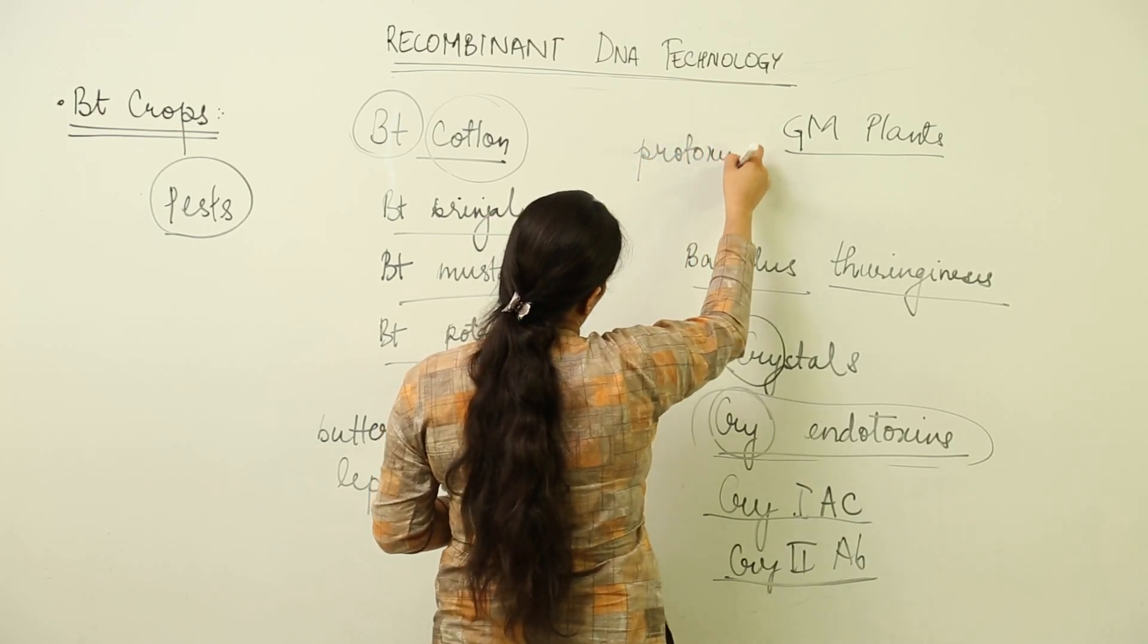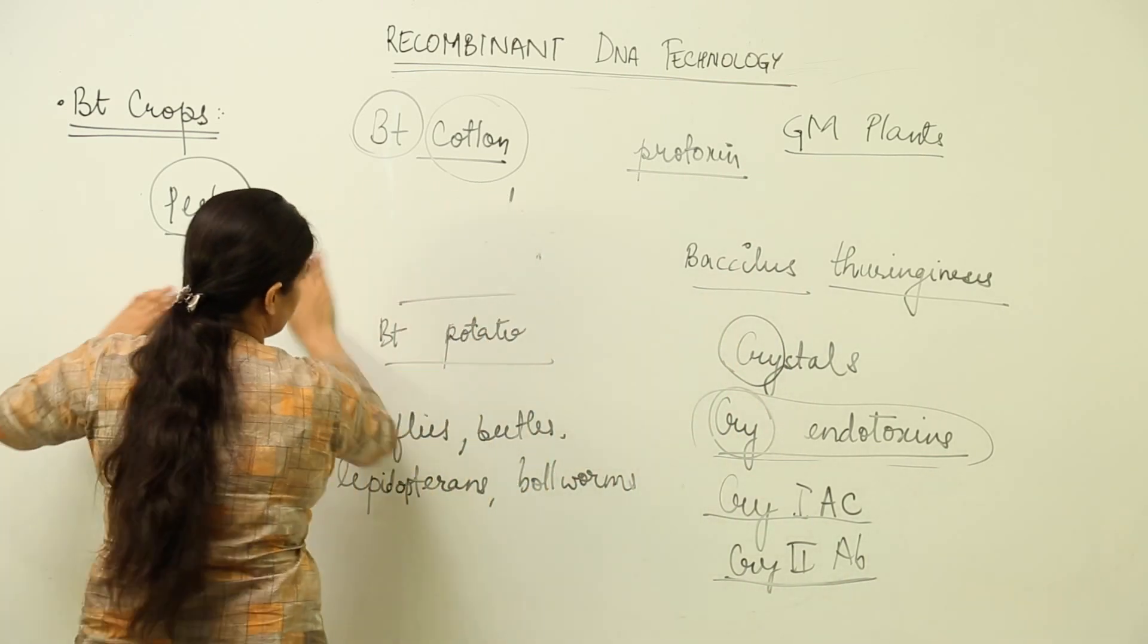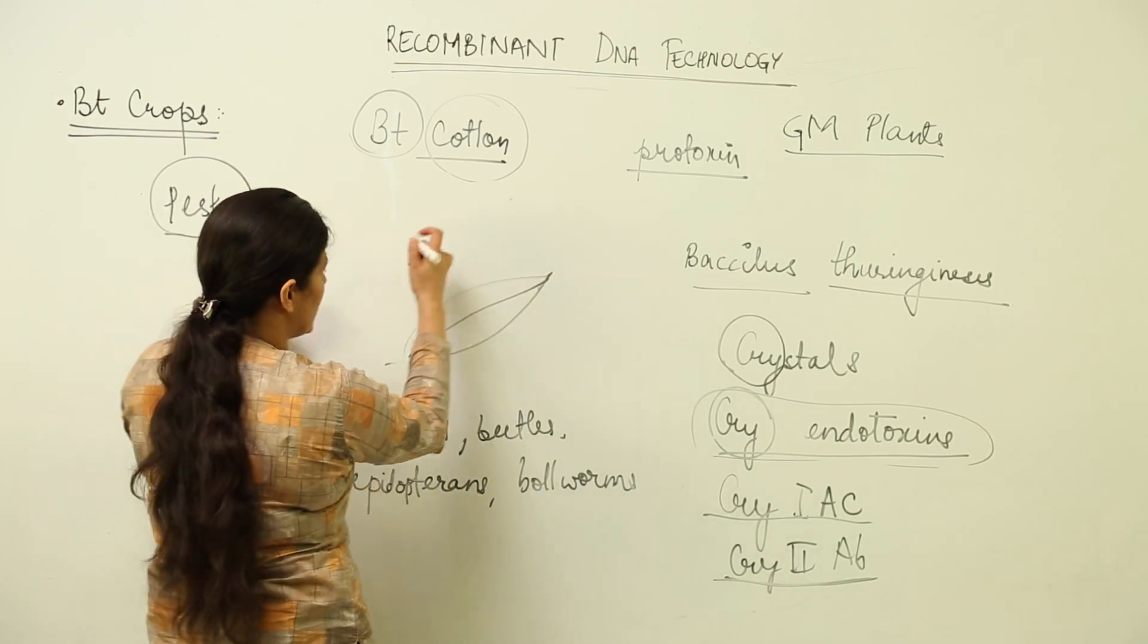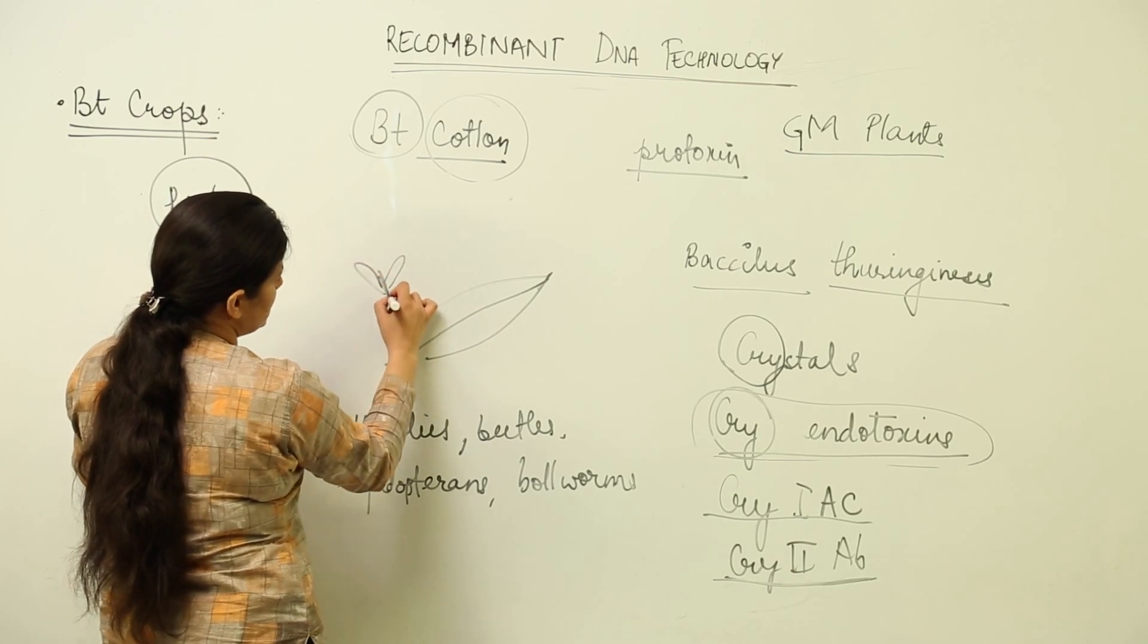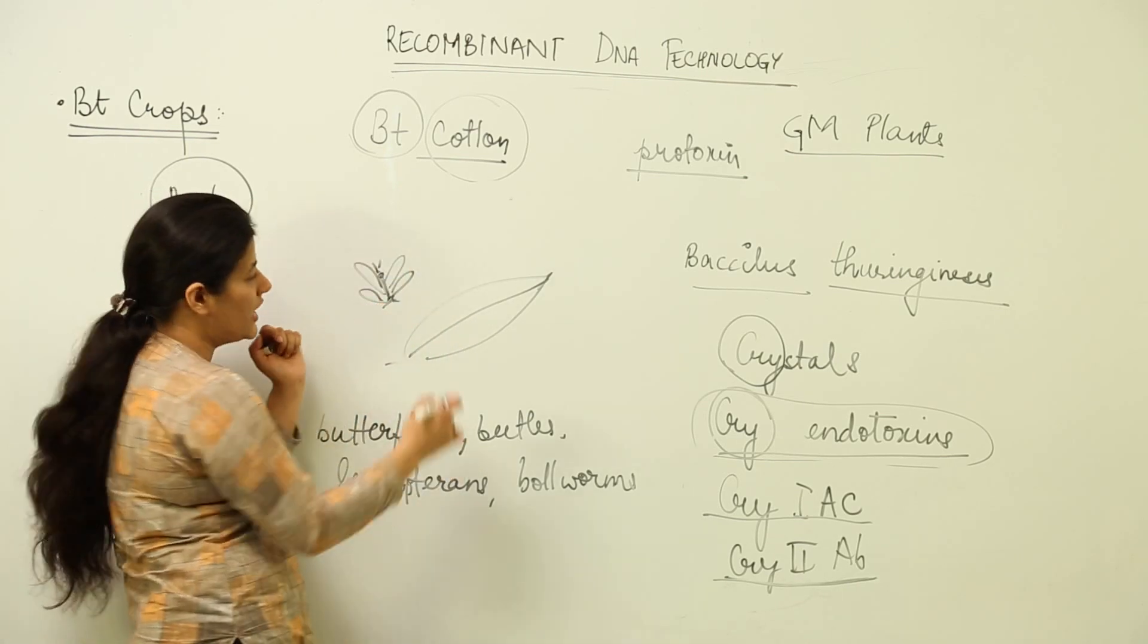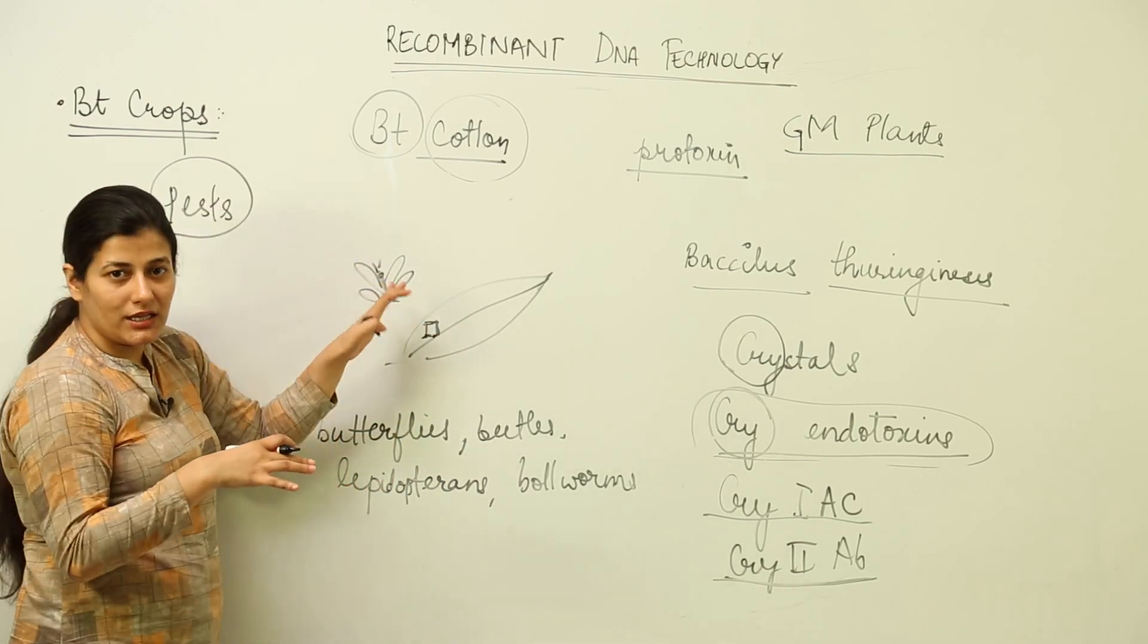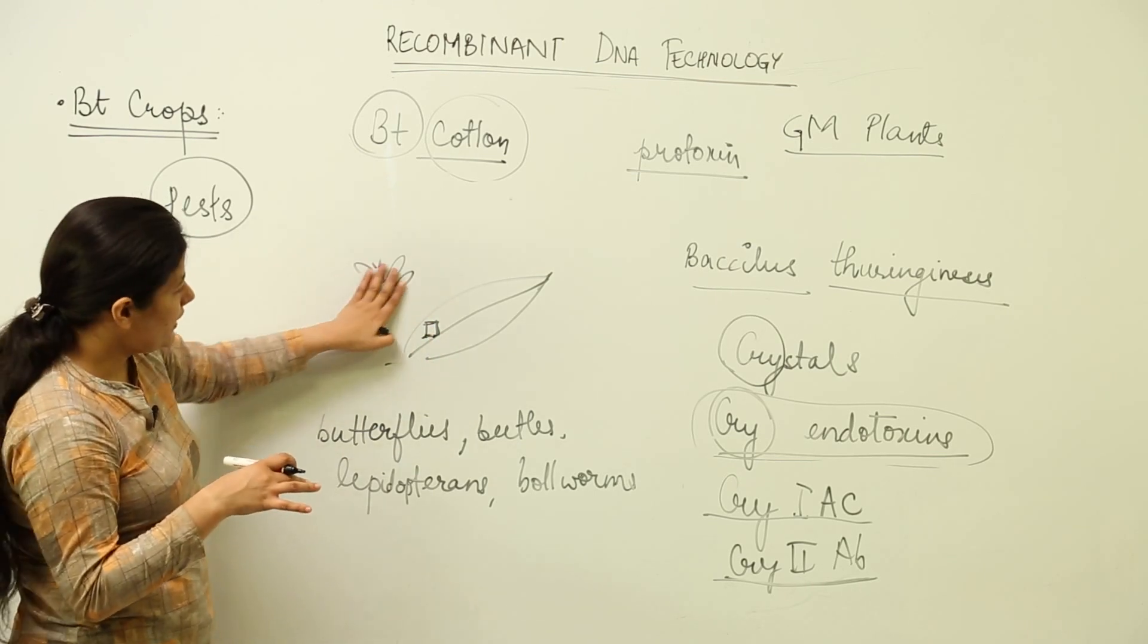This protoxin is present in the leaves of BT cotton. Some insect comes, supposedly a butterfly, and it feeds on this particular part of the leaf and eats it. When it eats it, the protoxin enters into the gut of the particular insect.